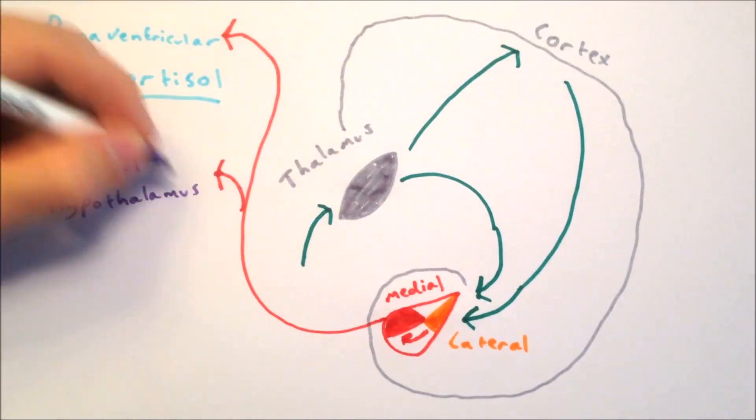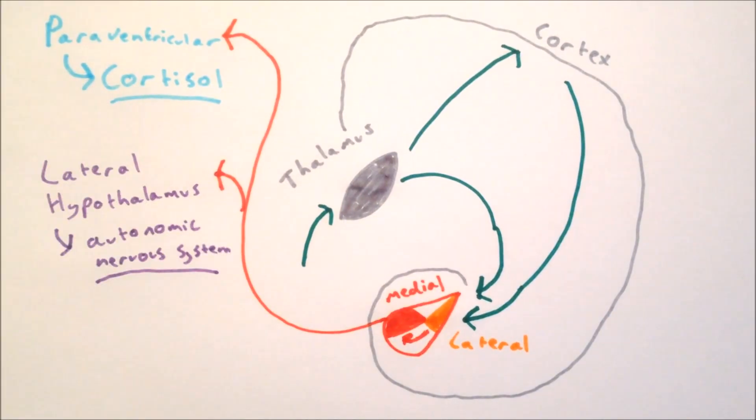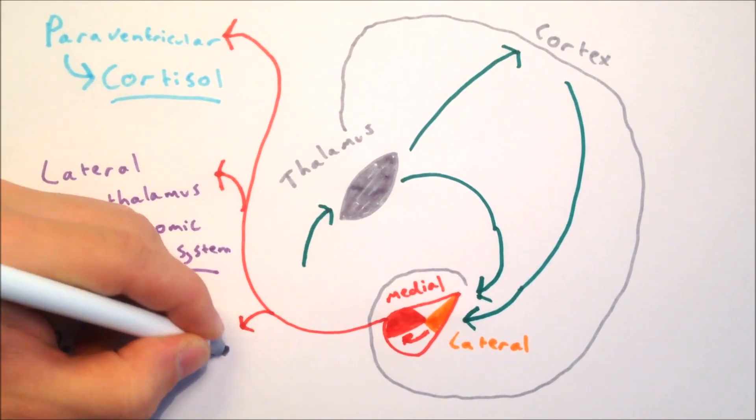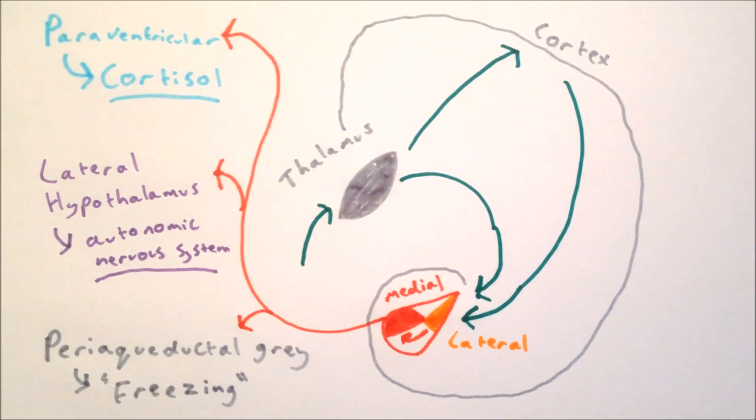It also projects to the lateral hypothalamus, stimulating the autonomic nervous system. And it also projects to the periaqueductal grey matter, which in mice causes fear behaviours, such as freezing.